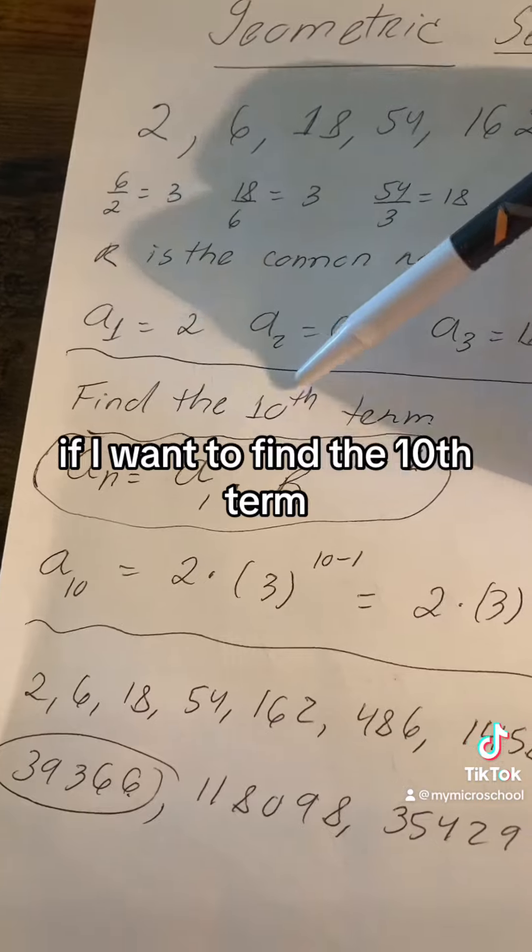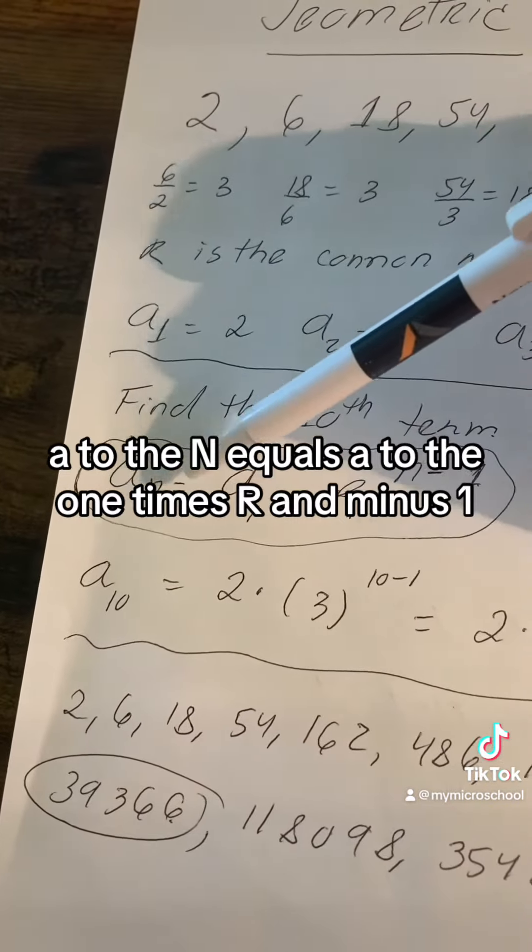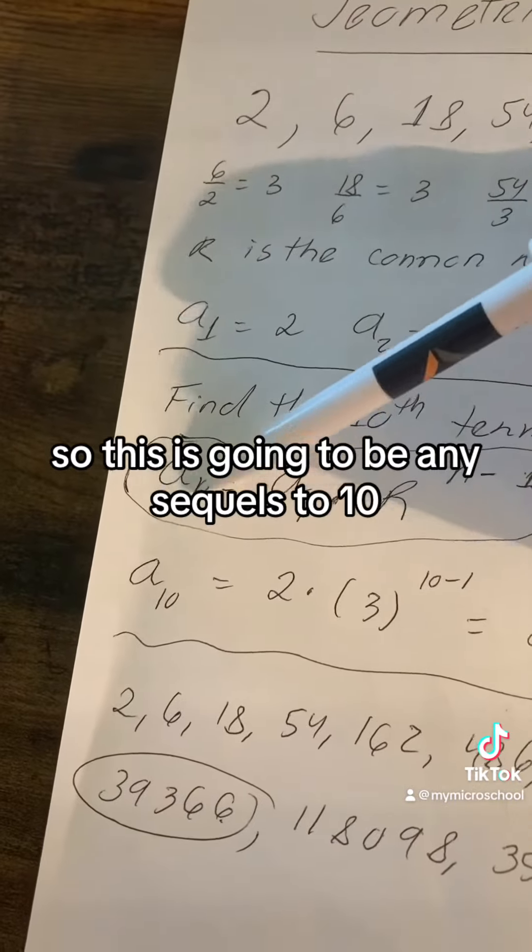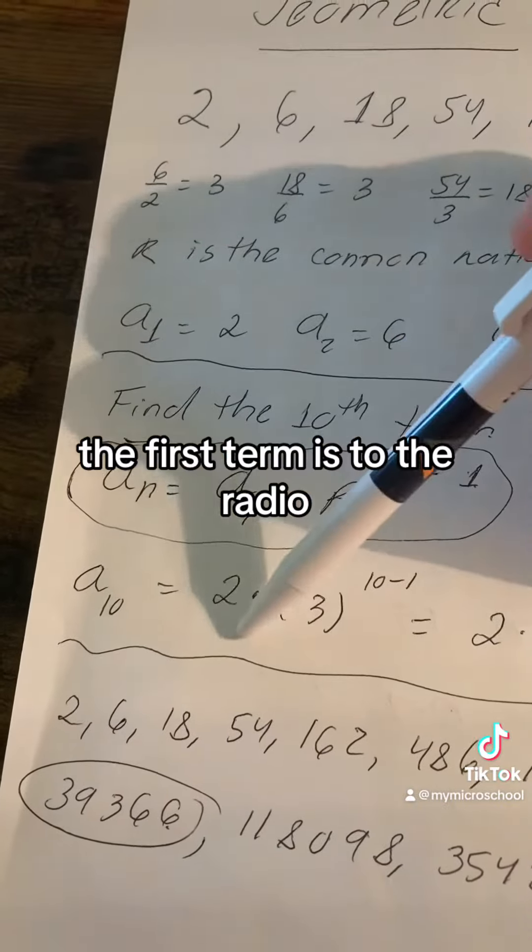Now, if I want to find the 10th term, I need to use this formula. Notice that the formula is aₙ = a₁ · r^(n-1). So this is going to be n equals 10, just like in the other formula. The first term is 2,